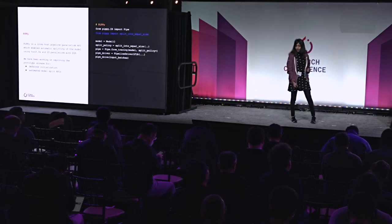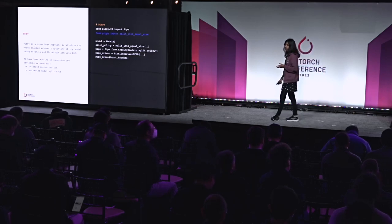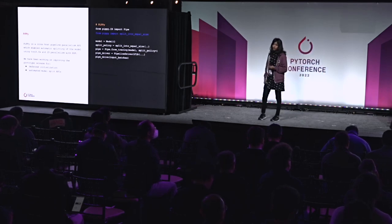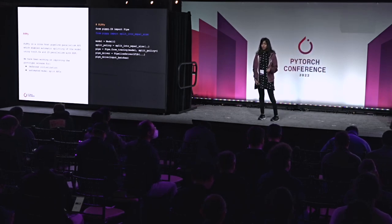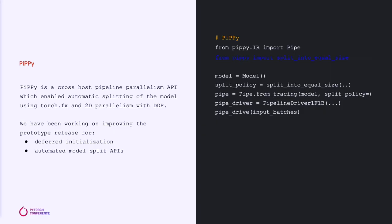Looking at the example on the right, we have a pipe object that we instantiate from a split module, and it's the pipeline driver that we've instantiated that orchestrates the forward and backward passes, as well as how we do the micro-batching.